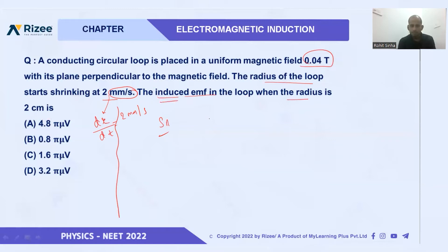We know EMF equals, if we are taking magnitude only, dΦ/dt. We can write this as d(B·A)/dt. See here, B is time independent, that is constant. So B constant, it will come outside. We can write B × d(πr²)/dt.